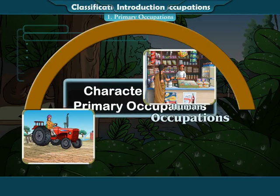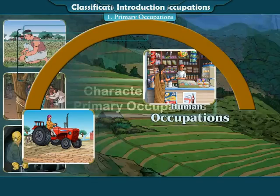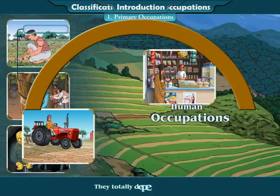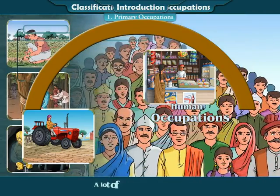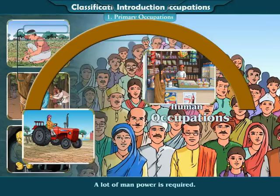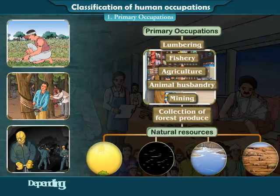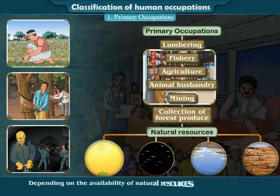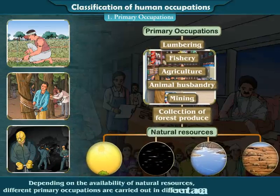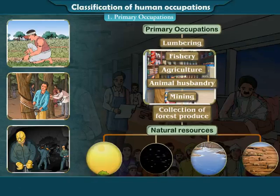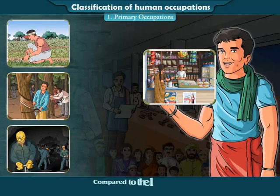Characteristics of Primary Occupations: First, they totally depend on nature. Second, a lot of manpower is required. Third, depending on the availability of natural resources, different primary occupations are carried out in different areas. Fourth, compared to the labor inputs, the returns are quite low.